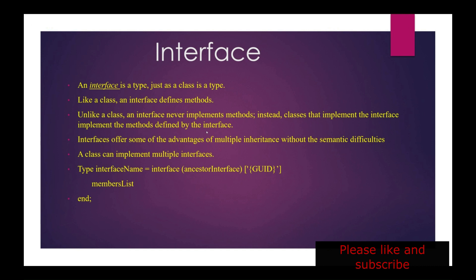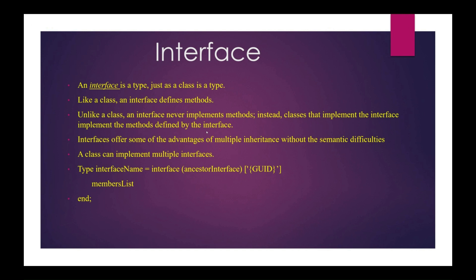We achieve multiple inheritance in Delphi this way, because we cannot inherit multiple classes. We can inherit multiple interfaces. In a type declaration, interface is also a type, so the syntax is: interface name equals interface, and we can write the ancestor — meaning within the interface we can also inherit another interface. After that comes the GUID — Globally Unique Identifier — and then we declare the list of members.